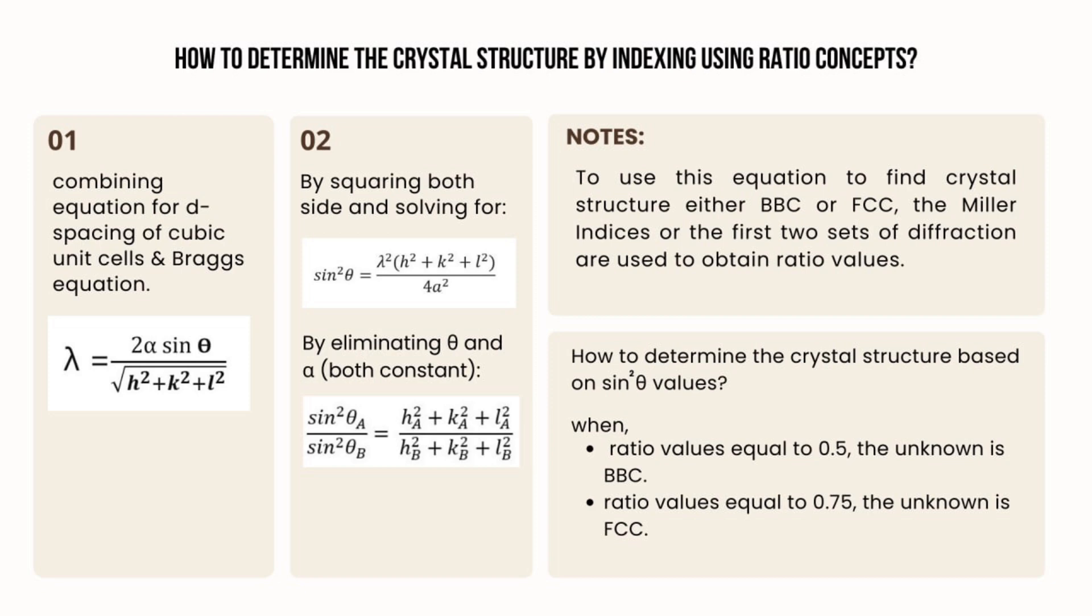Note that to use this equation to find crystal structure either BCC or FCC, the Miller indices or the first two sets of diffraction are used to obtain ratio values.